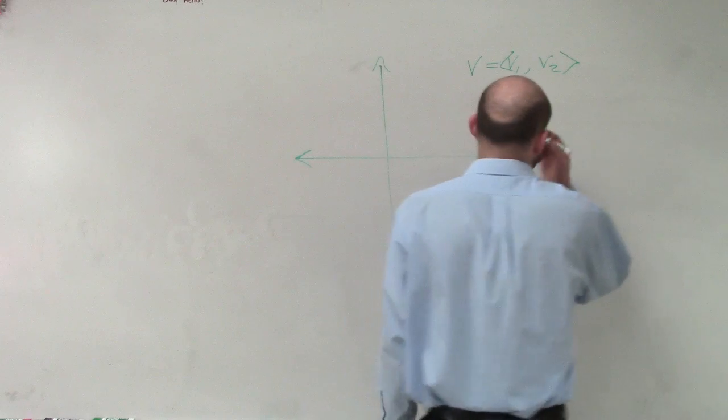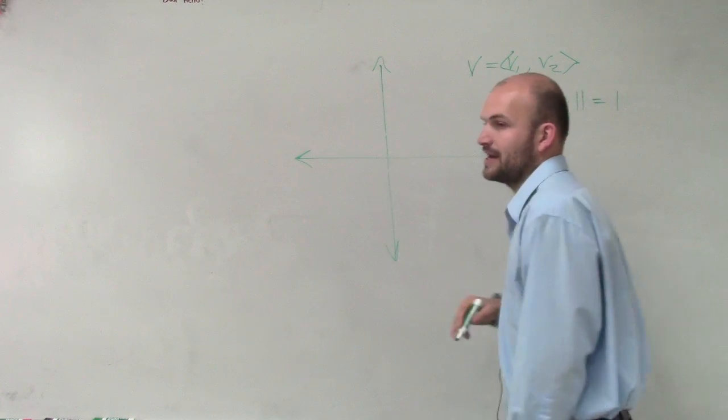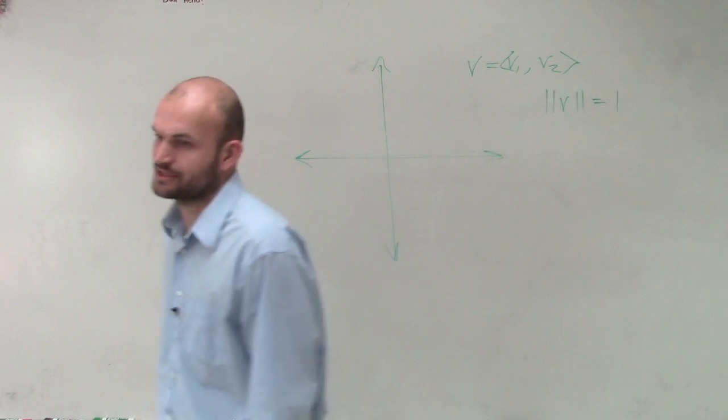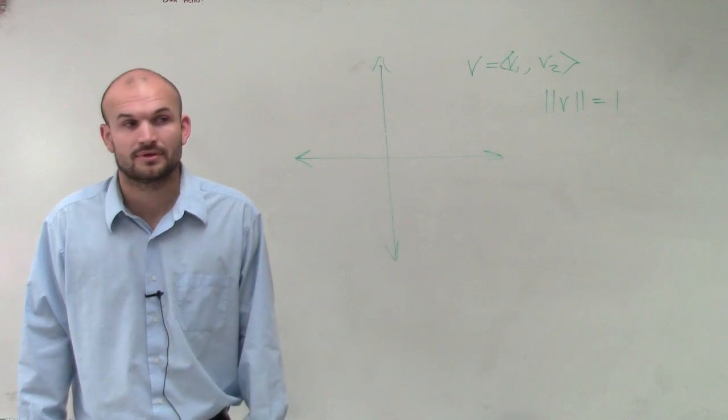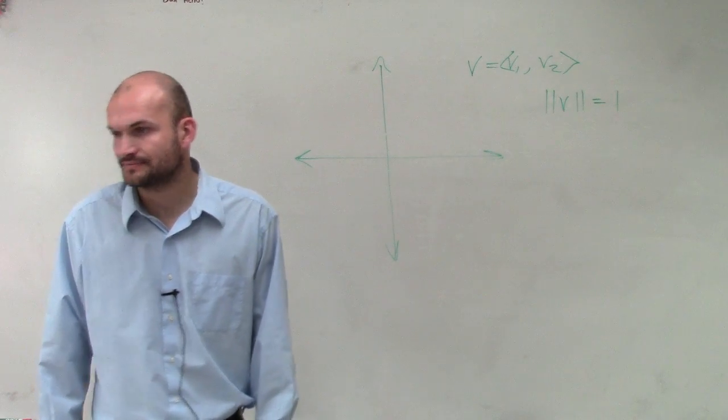Then the next thing we said was, if we had the magnitude of our component vector was equal to 1, then we have a lovely nice little unit vector.